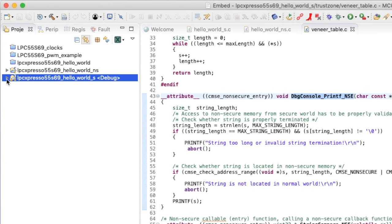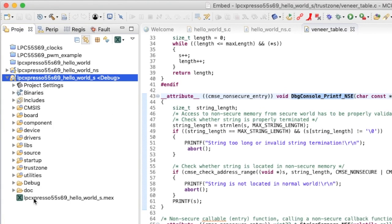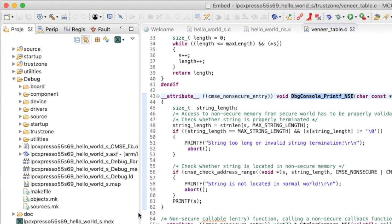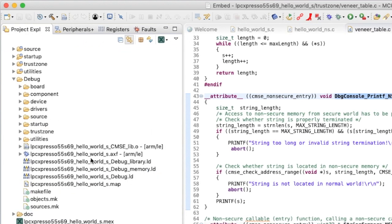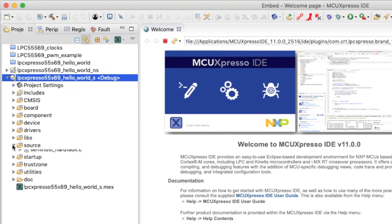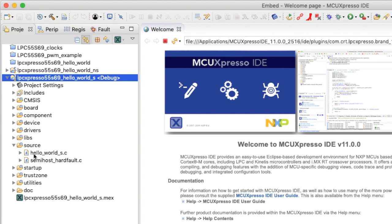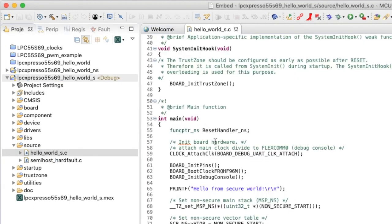And next week, when we look at these projects in more detail, we're going to see how the two projects, the secure project and the non-secure project are linked and the functions are called from one to another. So please come back next week when we look at the hello world secure and hello world non-secure projects in a lot more detail.